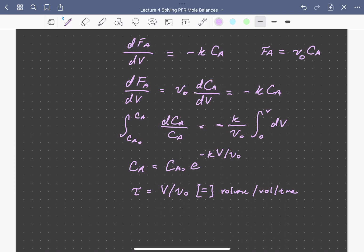Defining this term, we can now write that the concentration of A is equal to the initial concentration times the exponential function of the reaction rate constant times tau, the residence time.